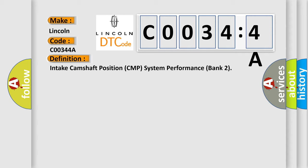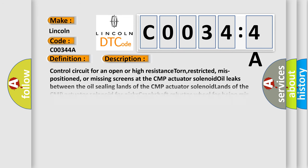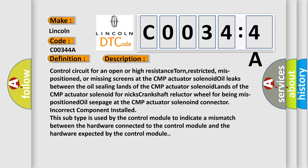And now this is a short description of this DTC code. Control circuit for an open or high resistance torn, restricted, mispositioned, or missing screens at the CMP actuator solenoid. Solenoid oil leaks between the oil sealing lands of the CMP actuator solenoid lands of the CMP actuator solenoid.